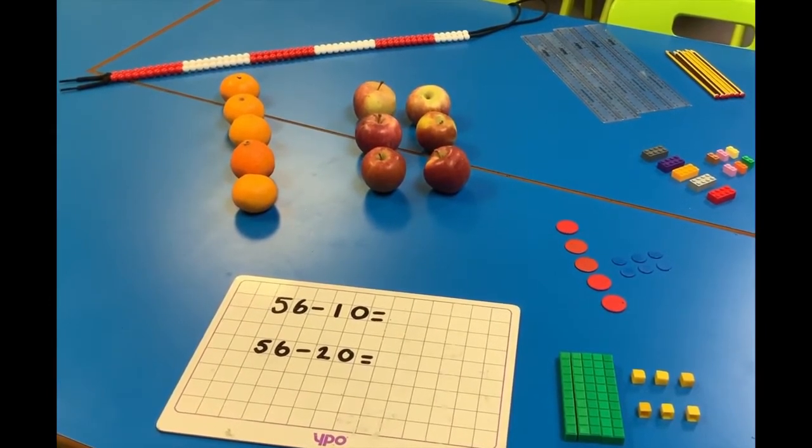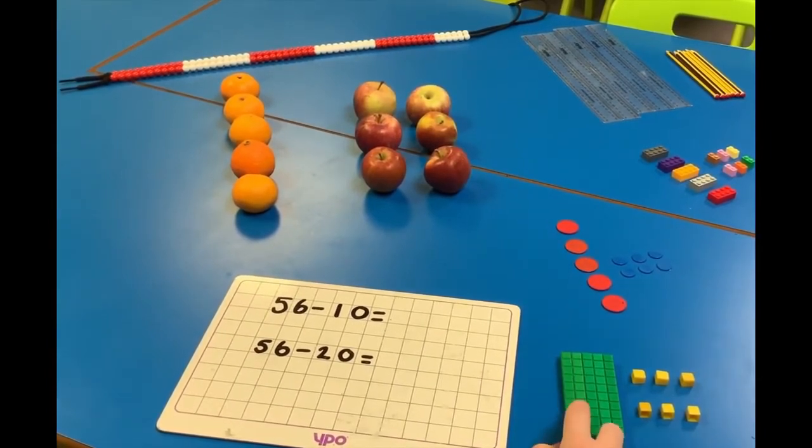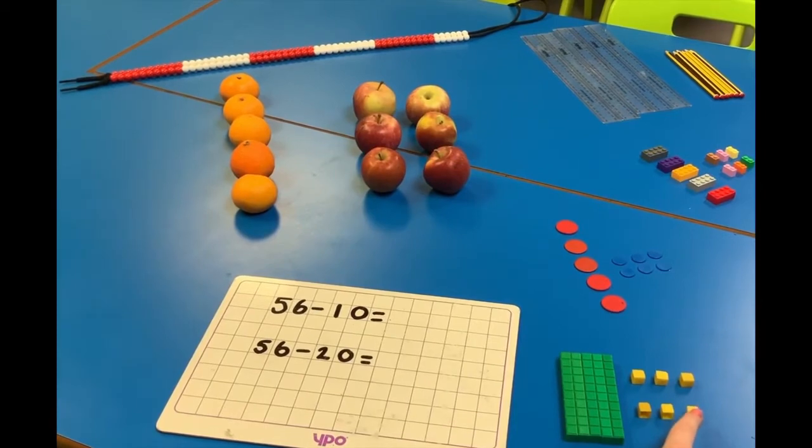I'm going to start by subtracting ten from fifty-six. I have got ten, twenty, thirty, forty, fifty, fifty-one, fifty-two, fifty-three, fifty-four, fifty-five and fifty-six.